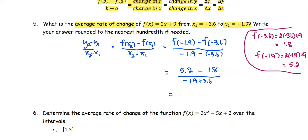So 5.2 minus 1.8 is 3.4, all divided by negative 1.9 plus 3.6, that is 1.7, and the number simplifies to 1.7.